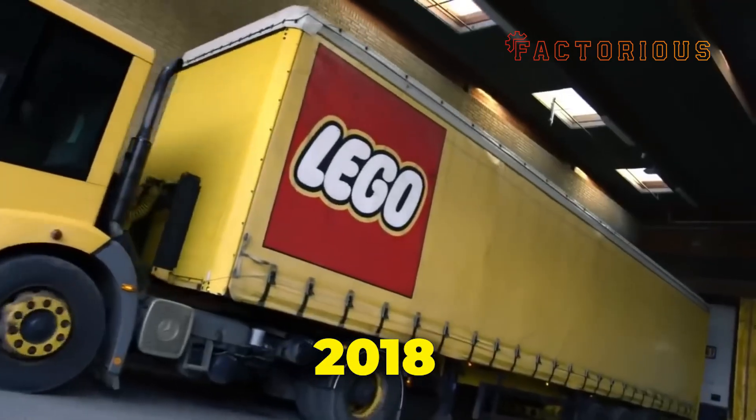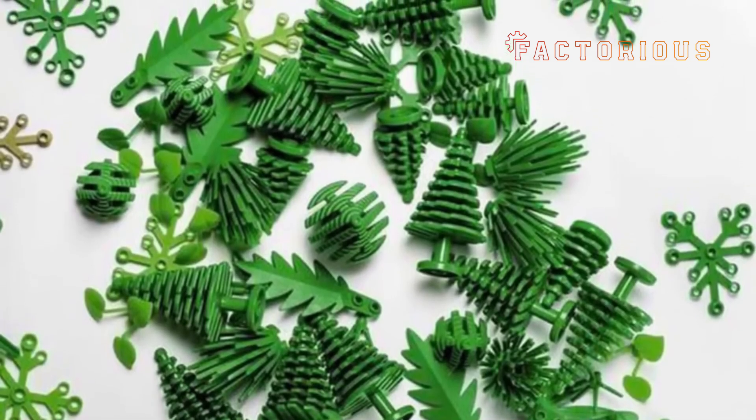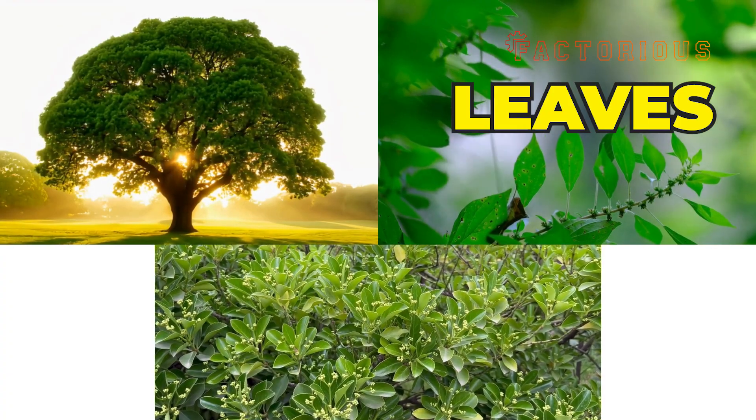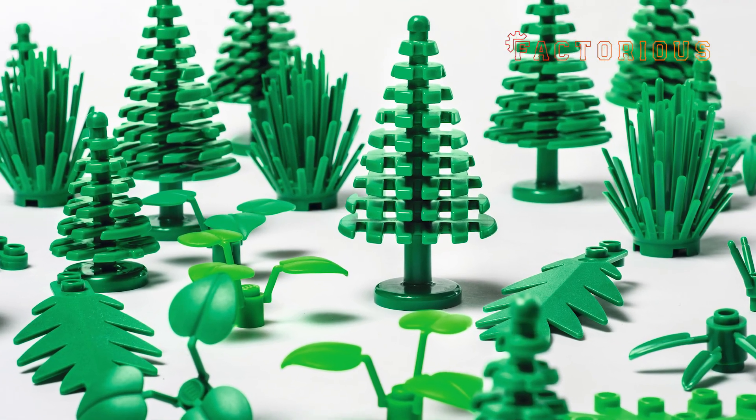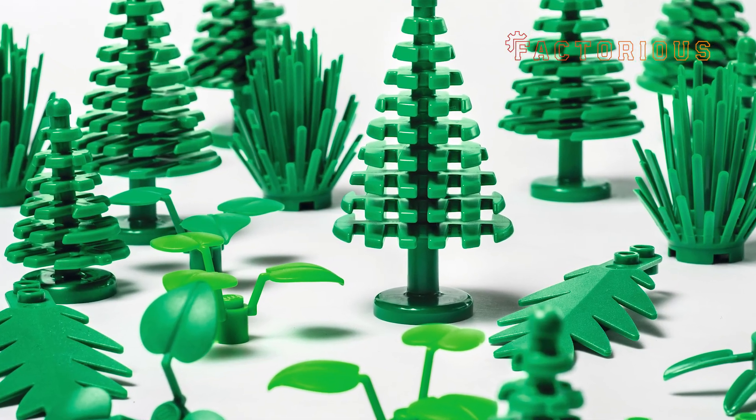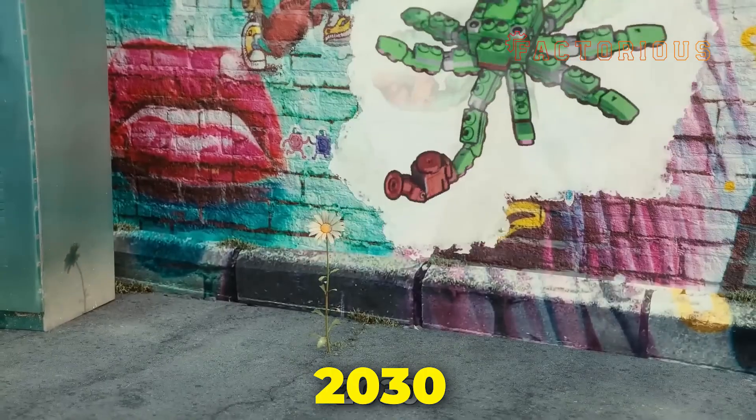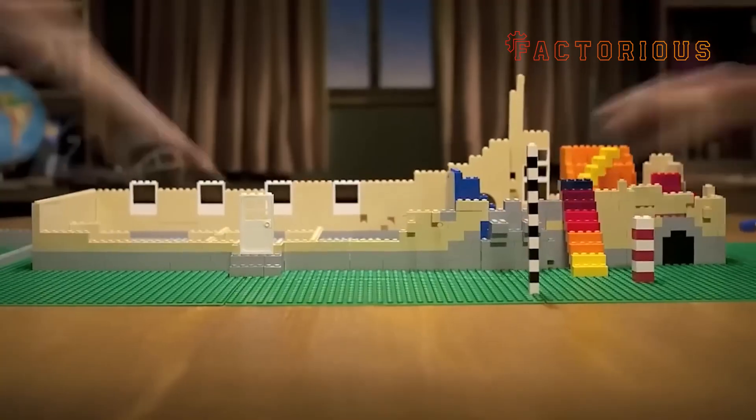In 2018, Lego made a big breakthrough. They began producing plant-based polyethylene pieces, made from sugarcane, for softer elements like trees, leaves, and bushes. These are chemically identical to traditional plastic but made from renewable sources. By 2030, Lego aims for all its core products to be made from sustainable materials, while still maintaining that exact Lego quality standard.